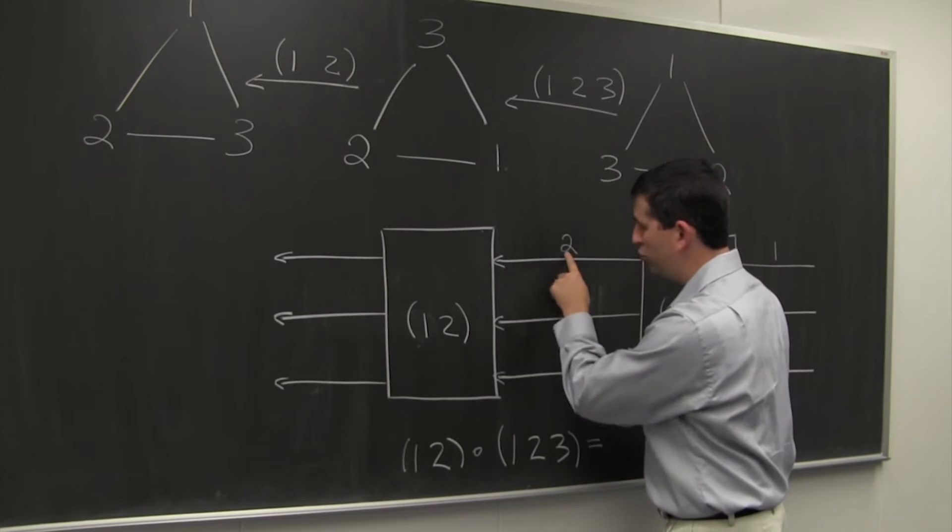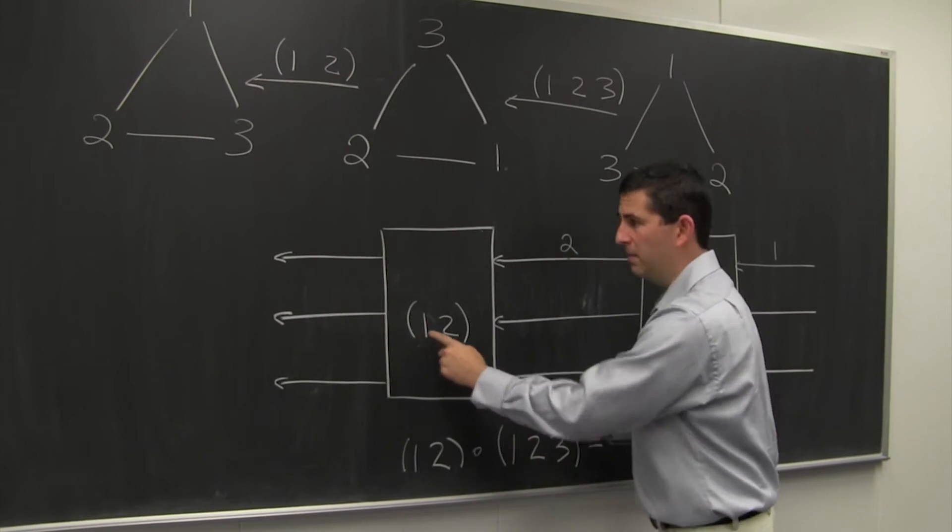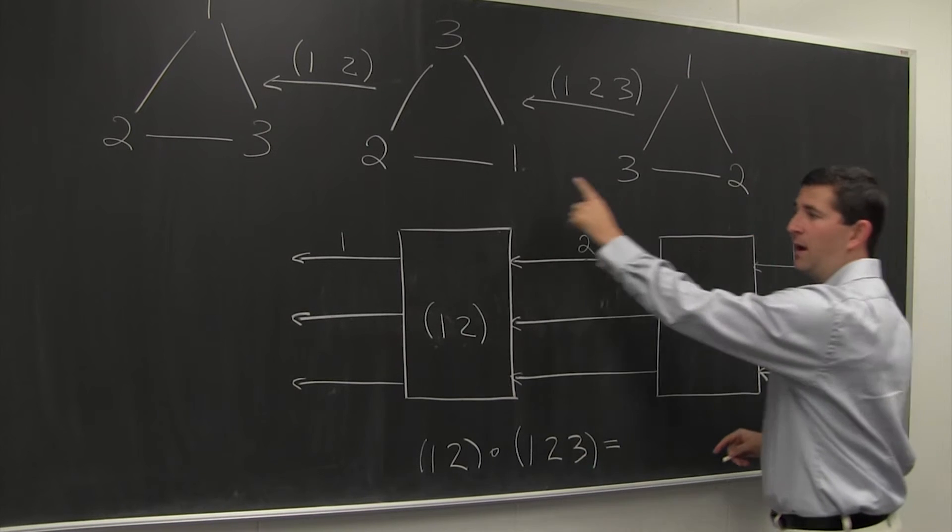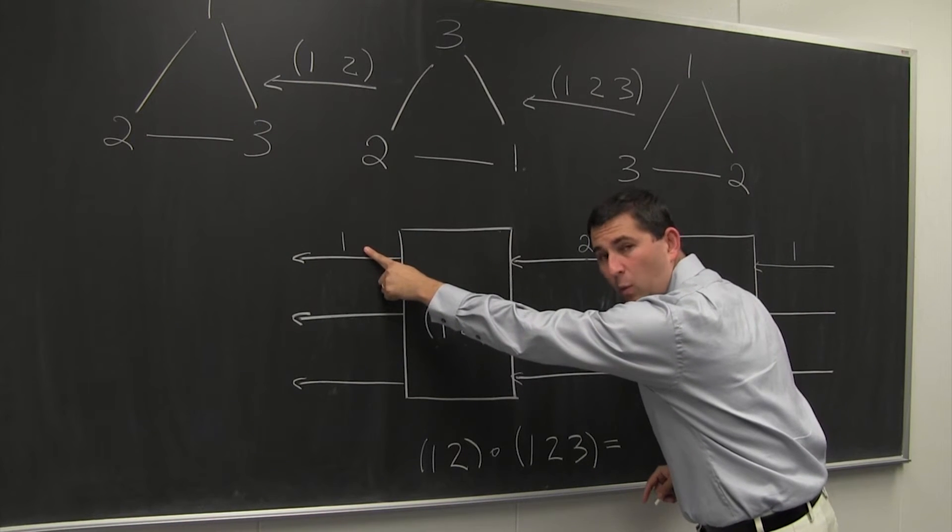And now, in the second one, 2 goes in, and 1 comes out. So in total, 1 has actually gone back to itself. So 1 is fixed.